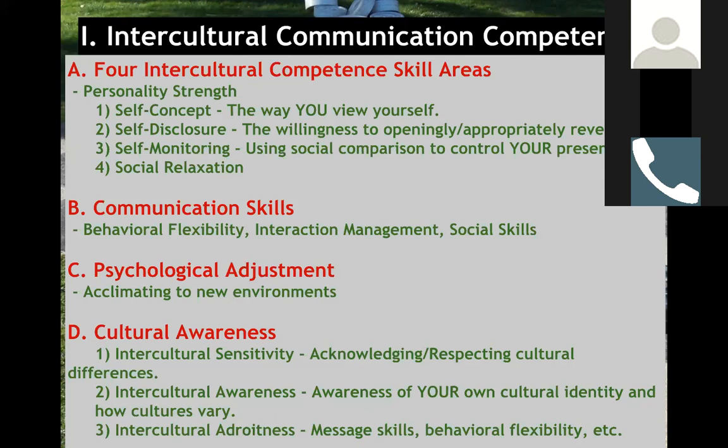Social relaxation is the fourth skill area — basically how relaxed you are around different groups of people. For example, when I go to Mexico or Canada, I'm not as relaxed as I am in Texas, because there are rules, regulations, and laws I don't know. So I'm less relaxed there than I am here. Those are the four intercultural competence skill areas. If you have any questions, type them in the Zoom chat or tweet me on Twitter.